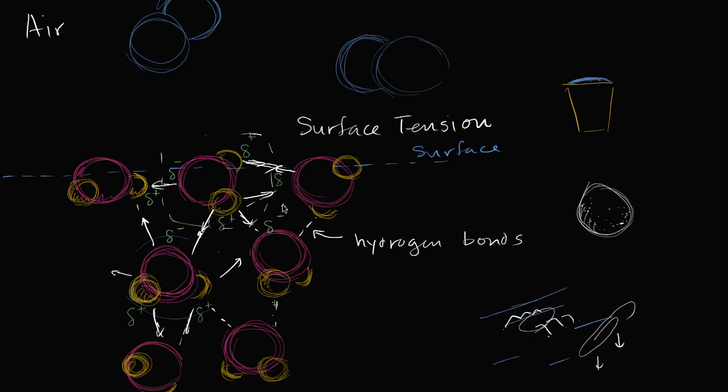So surface tension, it is really due to the cohesion of the water. Remember, cohesion is when the molecules are attracted to each other, and especially because they're more attracted to each other than the surrounding air.